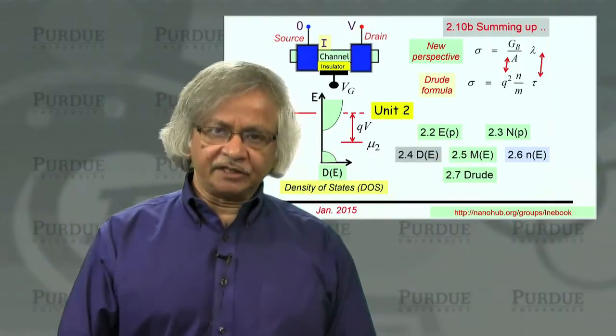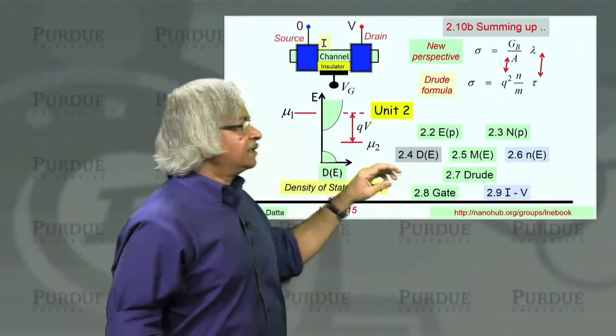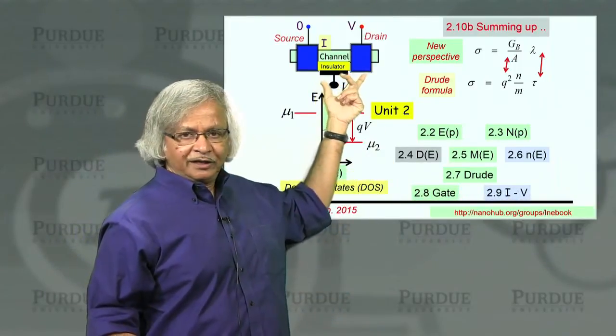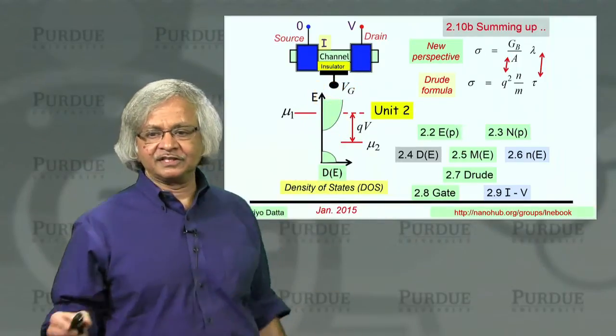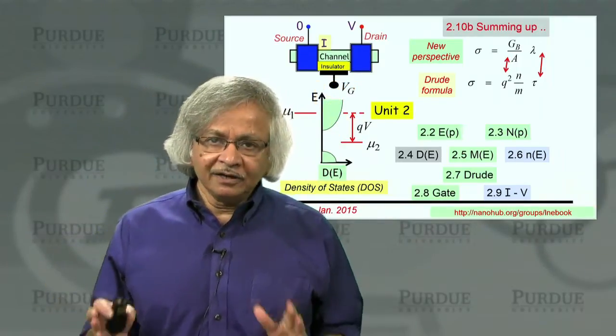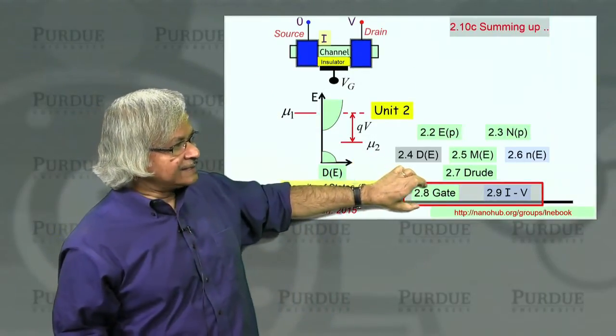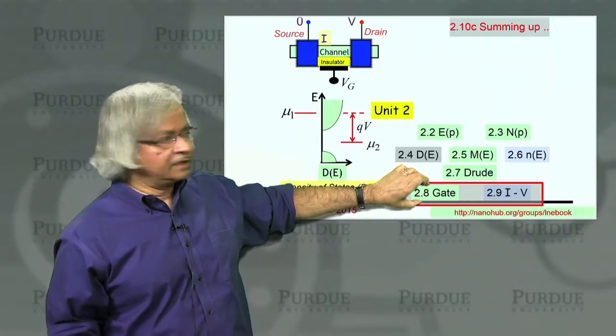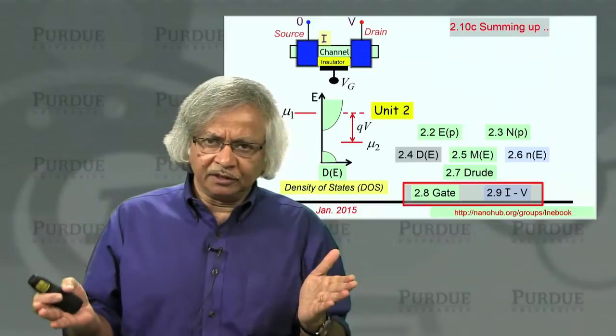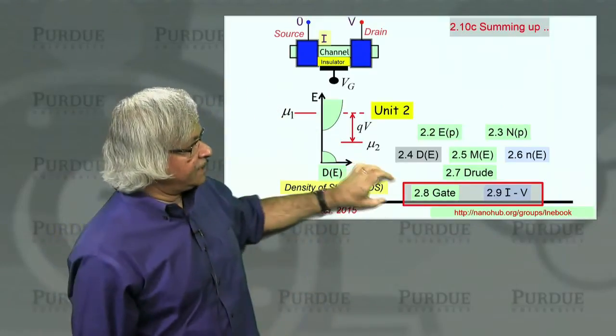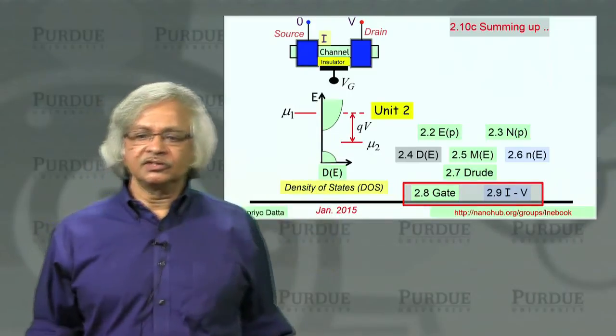Then in the last two lectures, 2.8 and 2.9, we introduced this new element into it. Namely, the third terminal, this gate voltage, which of course is a very important part of a transistor. So that's something we introduced only in these last two lectures. Up to here, we are basically just talking of ordinary two-terminal device. Here we introduced this gate voltage.